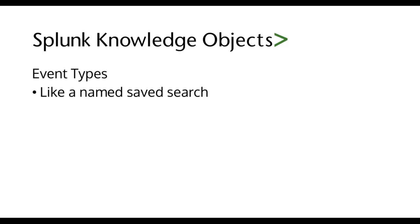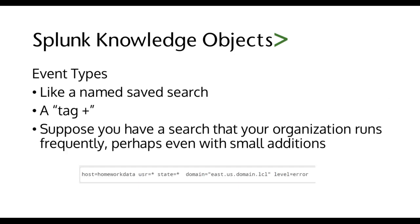I also love event types — kind of like a named saved search and kind of like a tag on steroids. You can tag an entire search string before the first pipe with an event type. So suppose you have this search, and if your organization runs it frequently, you may want to give it a friendly name, i.e. an event type.